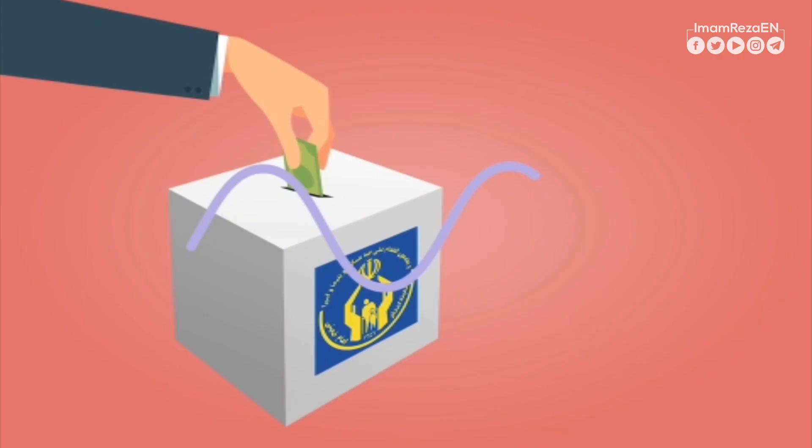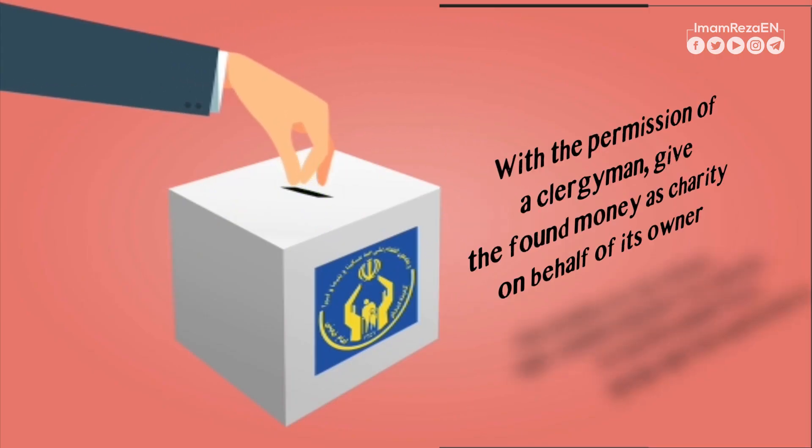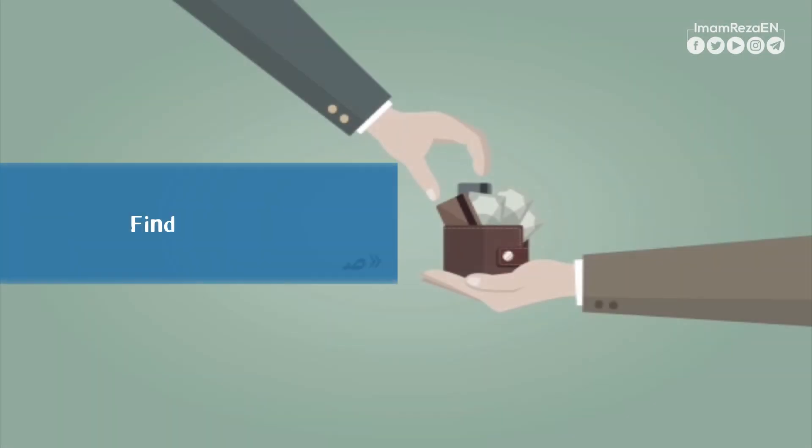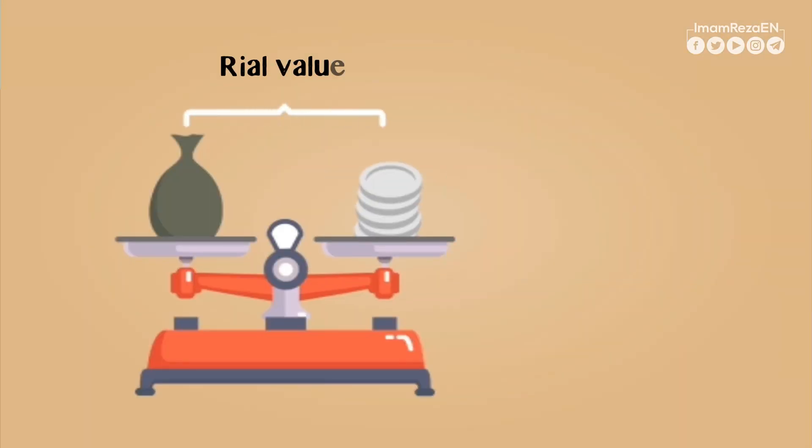In that case, it is recommended that it be given as charity on behalf of the owner with the permission of a clergyman. However, if the found property has identifying marks and its value is approximately two and a half grams of silver or more...